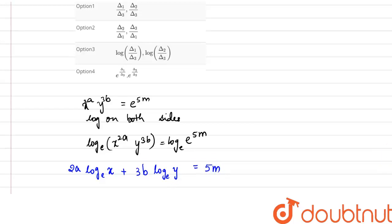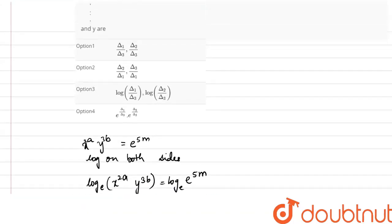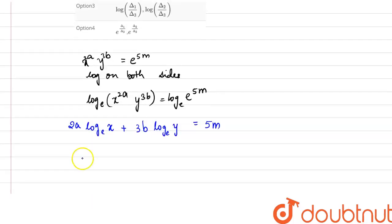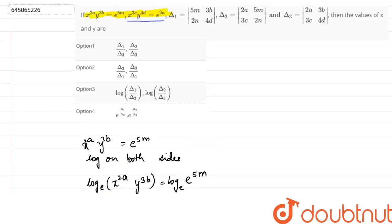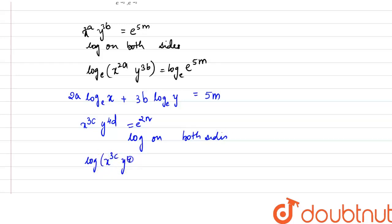Similarly, in the next equation, we have x^(3c) · y^(4d) = e^(2n). If we take log on both sides, we get: log base e of (x^(3c) · y^(4d)) = log base e of e^(2n).